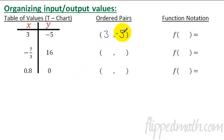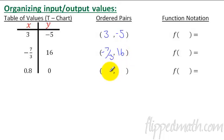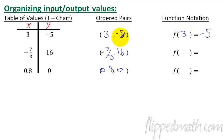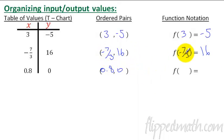We're now comparing ordered pairs with a table of values in a t-chart. If you have a bunch of X's and Y's, the pair (3, negative 5) is exactly the same as that ordered pair. Function notation like f of negative 7 thirds equals 16 just means x is negative 7 thirds and y is 16 — it's just an x and a y. Similarly, f of 0.8 equals 0 means 0.8 is the x and the y value is 0.